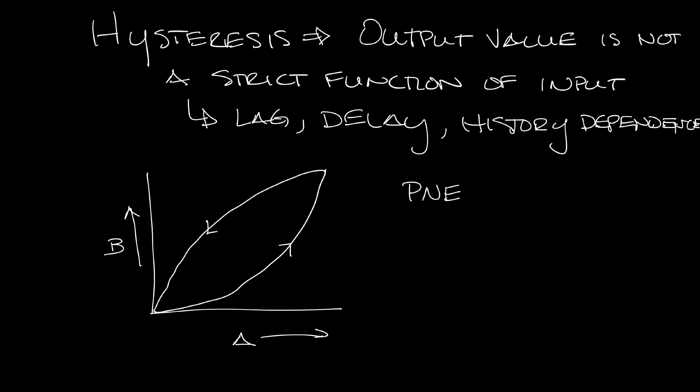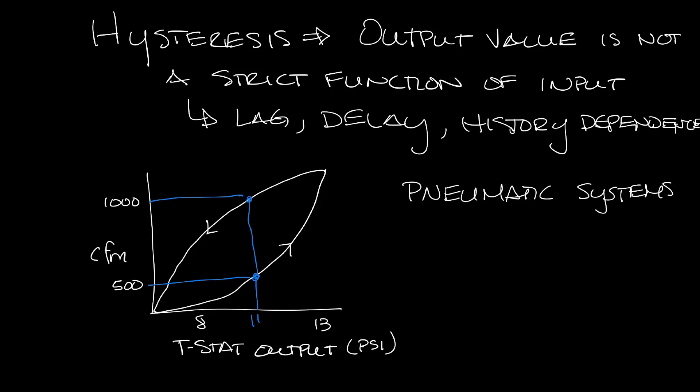So what does this mean for HVAC? Well, pneumatic systems have hysteresis. Let's erase A and B and put down here thermostat output in PSI. We'll go from 8 to 13 and then CFM. Let's say 500 and 1000 is up here somewhere. When the thermostat signal increases, the controller CFM increases like this bottom curve, but when the thermostat signal decreases, it comes back down like this top curve. Coming back down at 11 PSI, it's 1000 CFM.